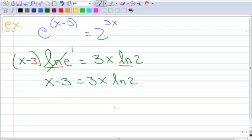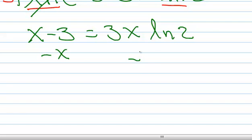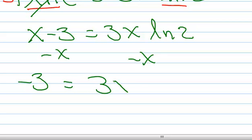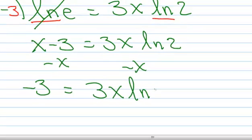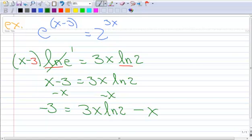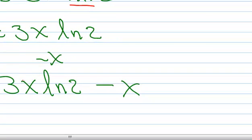The idea is to get all of our x terms together. So I'm going to subtract x from both sides. Then I'm left with negative 3 on the left, and on the right I've got 3x·ln(2) minus x. Let me highlight these x's in red — you can see each term on the right has an x in it.